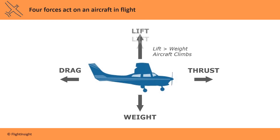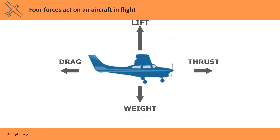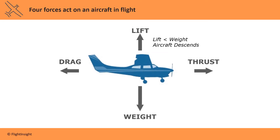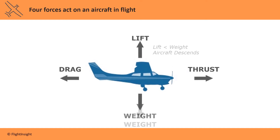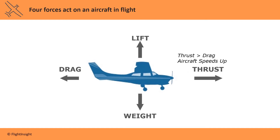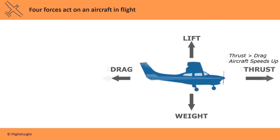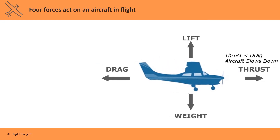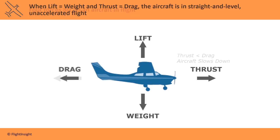When the aircraft produces more lift than its weight, it will climb. When the lift produced is less than its weight, it will descend. Similarly, when the aircraft produces more thrust than its drag, it will speed up or accelerate. And when it produces less thrust than its drag, it will slow down. When lift equals weight and thrust equals drag, the aircraft is in straight and level unaccelerated flight.